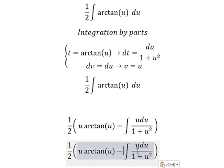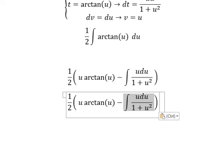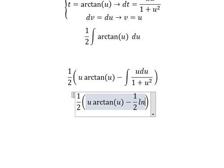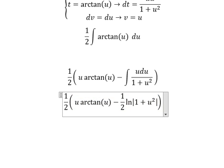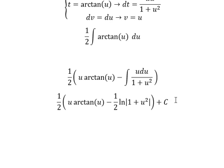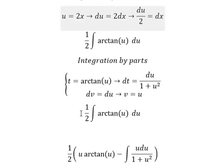The integration of this one, we have 1 over 2 ln of the absolute value of 1 plus u squared, and we put a c here. For u, that is 2x.